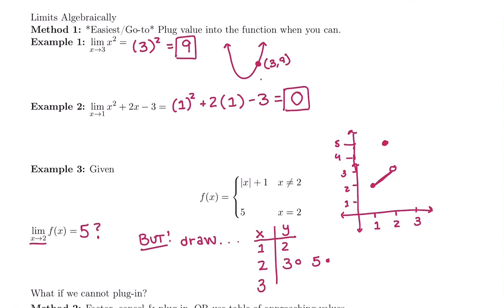Same thing, we'll plug in 3. We'd plug into just the top piece. Absolute value of 3 is 3 plus 1 is 4. So we'd get the point 3, 4.